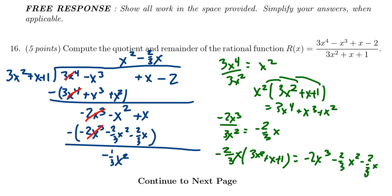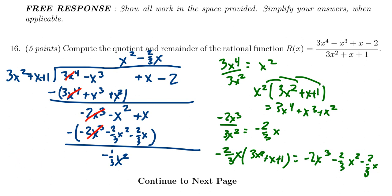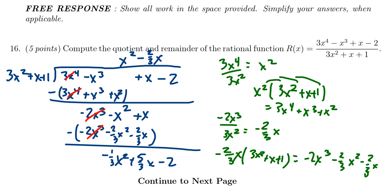For the x term, distributing the negative sign gives 1 plus 2/3, which is 3/3 plus 2/3, equaling 5/3. So we get 5/3 x. We bring down the negative 2. Now we repeat once more: the leading term is negative 1/3 x squared divided by 3x squared. That gives negative 1/9 as the next quotient term. At this point, we have found our quotient.